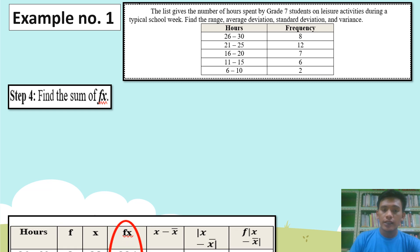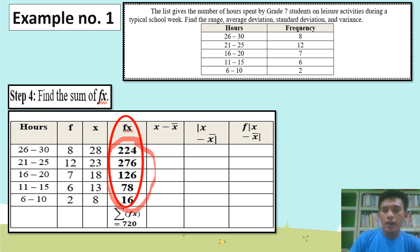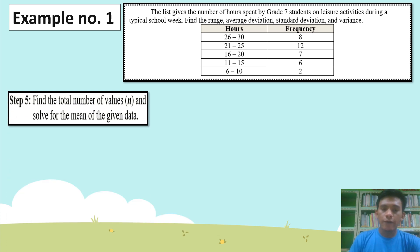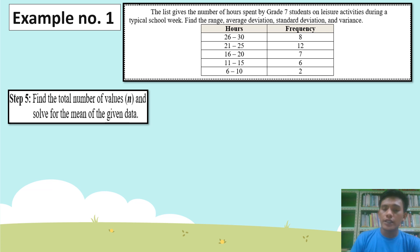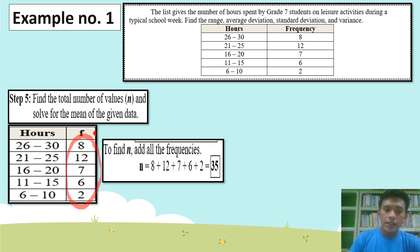Step 4: Find the sum of FX. Summation of FX — just simply add all the values of FX. Add 224 plus 276 plus 126 plus 78 plus 16, and the summation of FX is equal to 720. Step 5: Find the total number of values, which is N. From the given, the frequencies are 8, 12, 7, 6, 2. Just simply add all the frequencies to get N: 8 plus 12 plus 7 plus 6 plus 2 equals 35.